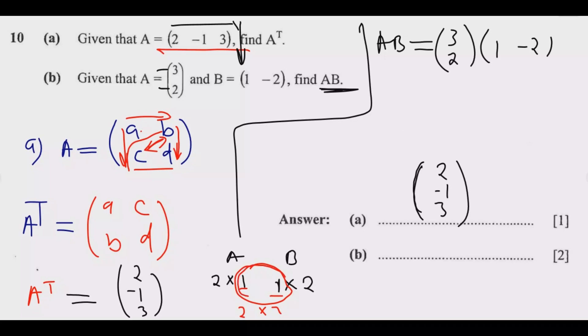Once you check what's inside, what you notice is the product is what remains outside. So the product will be 2 by 2—the result should be a 2 by 2 matrix.